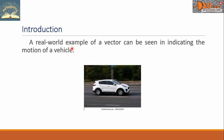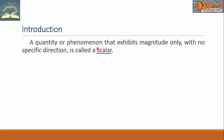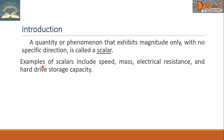A real-world example of a vector can be seen in indicating the motion of a vehicle. A quantity or phenomenon that exhibits magnitude only with no specific direction is called a scalar. Examples of scalars include speed, mass, electrical resistance, and hard drive storage capacity.